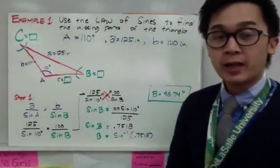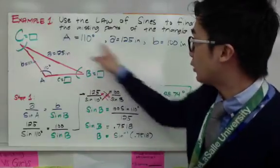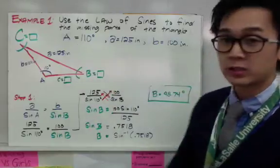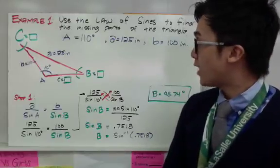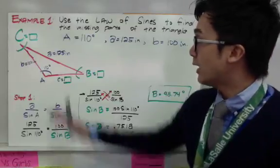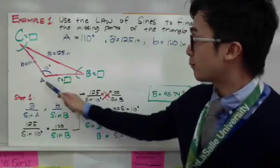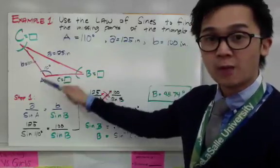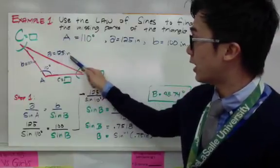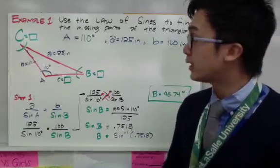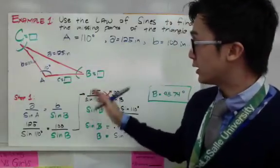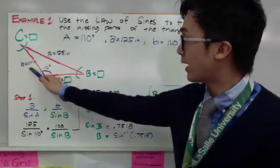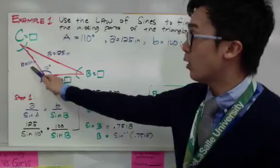Here's my first example. I have three missing parts because I have three given parts: an angle A of 110 degrees, side a equal to 125 inches, and side b equal to 100 inches. Using the law of sines, I'm going to find the missing sides and angle in this oblique triangle. Notice that angle A and small letter a are opposite each other — that is very important. Side a is 125 inches, and side b, which is opposite angle B, is 100 inches.